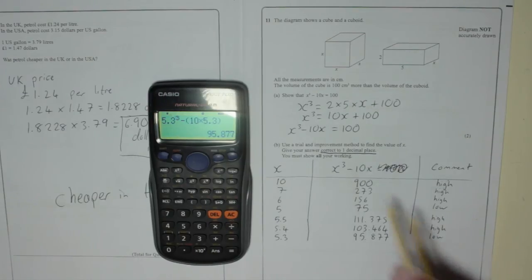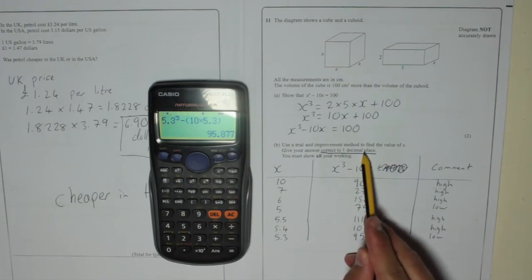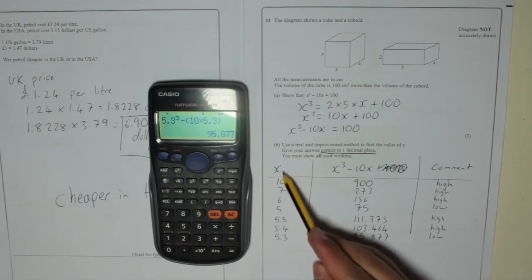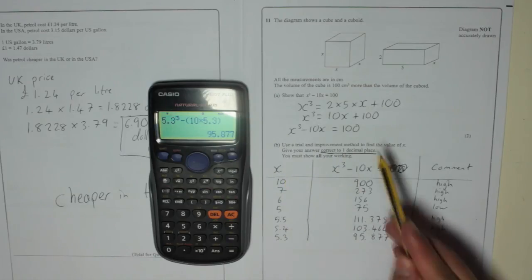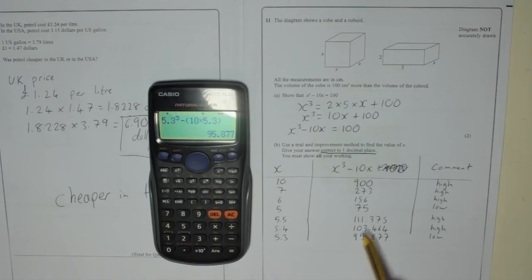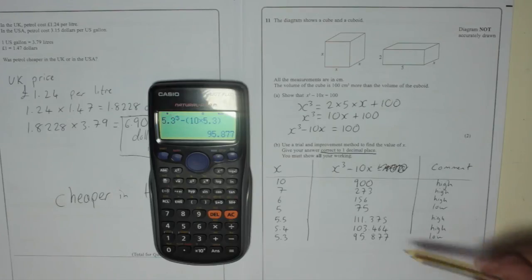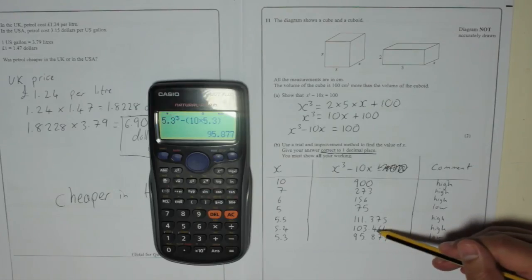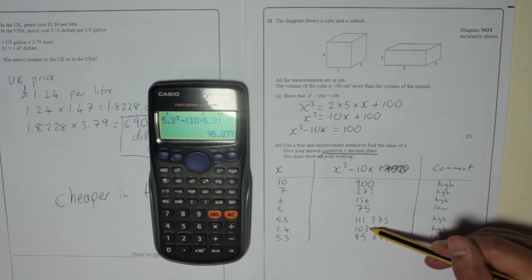So because it says give your answer correct to one decimal place, your answer is what we're choosing X as. What our value of X is that's going to give us 100. I know none of those will give us 100. But because we're within one decimal place our answer will be either 5.3 or 5.4. And we're going to put one there. Now if I just write one I will only get one mark. Well sorry I'll lose one mark. You could probably look at it and think well it looks like 5.4 is going to be the answer. Because that one's closer to 100 than that one. And you're probably going to be right.